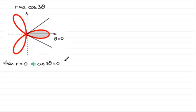And if that's the case, then 3 theta must be equal to plus or minus pi upon 2 radians, the equivalent of 90 degrees. It could also be equal to plus or minus 3 pi over 2, or plus or minus 5 pi over 2.